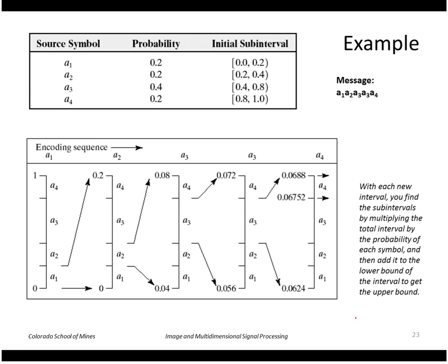Here's an example. Let's say we have a set of symbols as shown here and their probabilities. What we do is take the real number line from 0 to 1 and divide it up into intervals according to these probabilities. So for a1, a1 has probability 0.2, so we'll assign it the interval 0 to 0.2. a2 has probability 0.2, so it goes from 0.2 to 0.4.